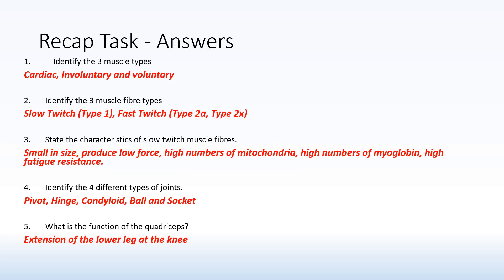Let's go through the answers. Question one: three muscle types. You've got cardiac, which is the heart; involuntary, examples found in the digestive system and in the walls of the blood vessels; and voluntary muscle, which relates to the 12 major muscles in the body — the ones we can consciously control, such as the biceps, triceps, quadriceps, hamstrings, etc.